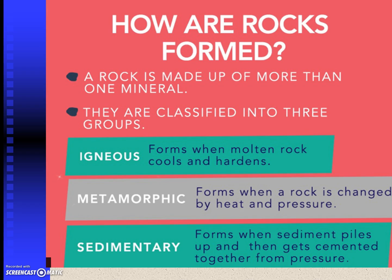So again, how the rocks are formed: a rock is made up of more than one mineral. They are classified into those three groups. Igneous is formed when molten rock cools and hardens. Metamorphic forms when a rock is changed by heat and pressure. And sedimentary forms when sediment piles up and then gets cemented together from pressure.